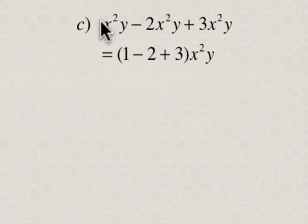The first coefficient here is understood to be 1, so this is 1 minus 2 plus 3, and we keep the variable and exponents the same when adding or subtracting like terms. So this is just 2, which is 1 minus 2 plus 3, x squared y. Keep the variable and exponents the same when you're adding or subtracting like terms.